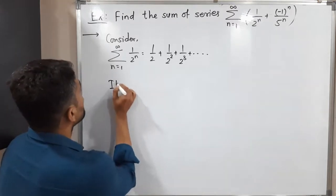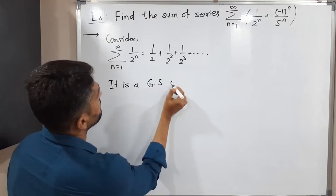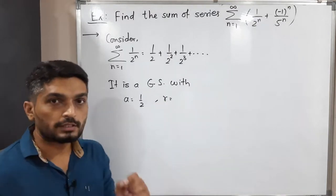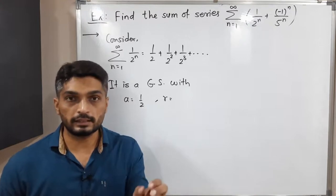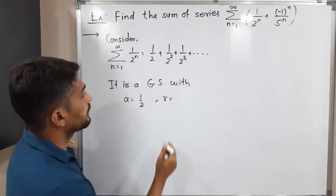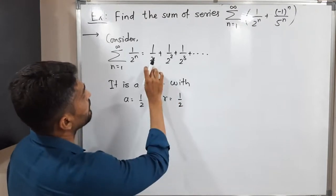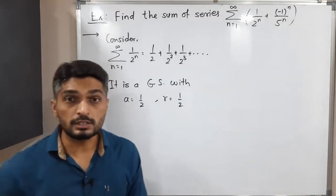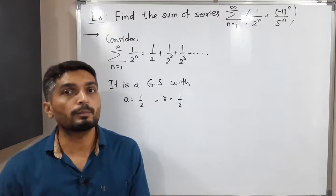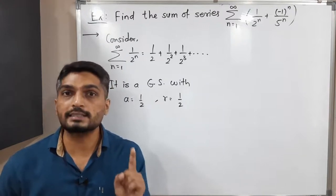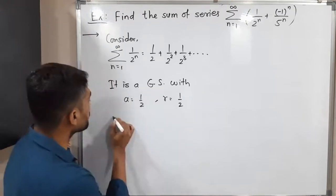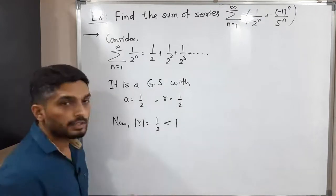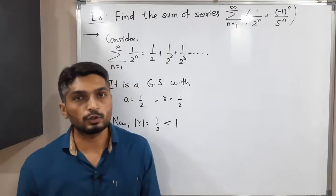This is a geometric series with first term a = 1/2 and common ratio r = 1/2, since multiplying any term by 1/2 gives the next term. We already know that a geometric series with |r| < 1 is convergent. Here, |r| = |1/2| = 1/2, which is definitely less than 1. So therefore the geometric series is convergent.